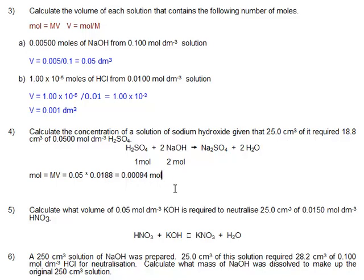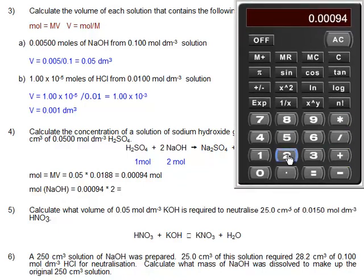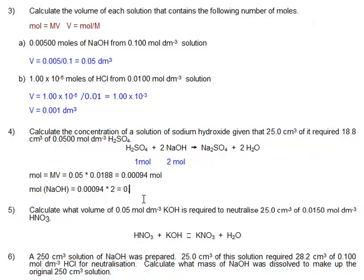Then we have to use our equivalence in the equation here that one mole is two moles of sodium hydroxide. So moles of sodium hydroxide equals this number of moles times two. Nine four times two. We're going to bring in our calculator for this. Multiply by two. 0.00188 moles of sodium hydroxide.